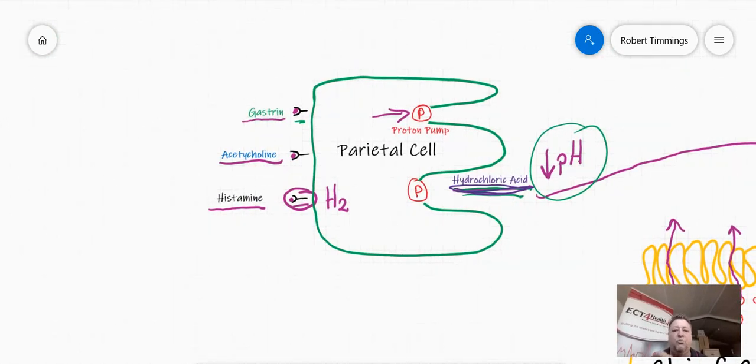Hydrochloric acid, as we'll recall, is made by these proton pumps, and the proton pumps are switched on by three receptors. This receptor here is called the gastrin receptor. This receptor here is called the muscarinic receptor, and it's switched on by a neurotransmitter called acetylcholine. And this receptor here is called the H2 receptor, or the histamine 2 receptor. And of course, because of its name, it's switched on by the immune substance released from mast cells and basophils whenever you have an allergic reaction, and this is called histamine.